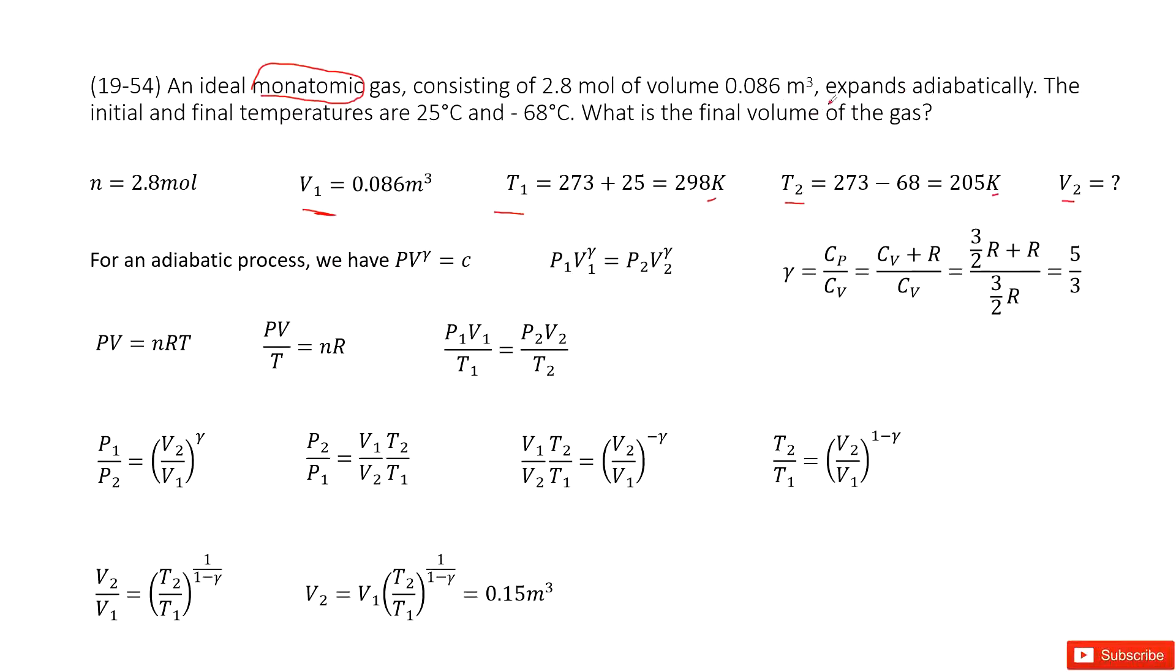Then we look at the question. How it changes from state 1 to state 2 is expanded adiabatically. This is another keyword. Now we can solve it. You can see we know V1, T1, T2, and we need to find V2. It looks like we need to find relationships between V and T in the initial state and the final state.